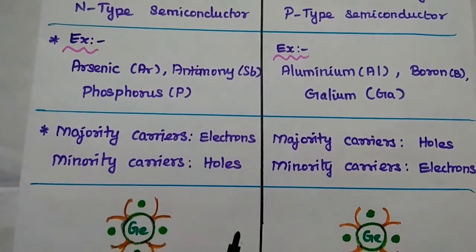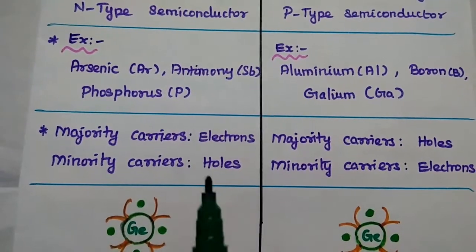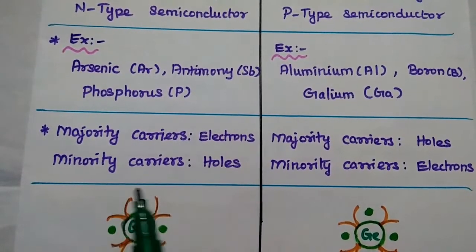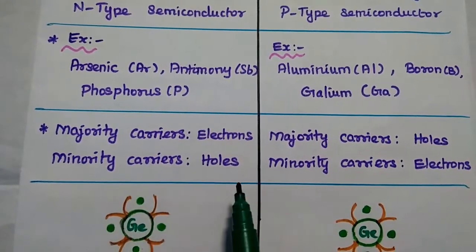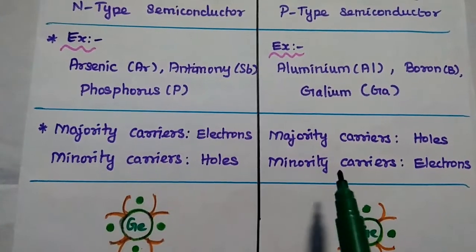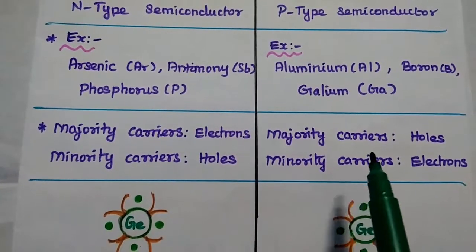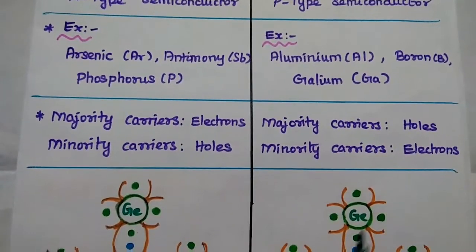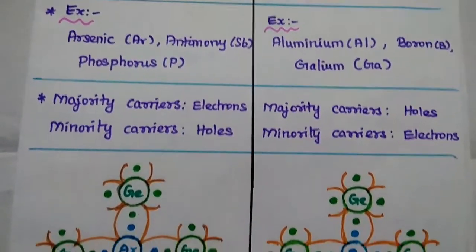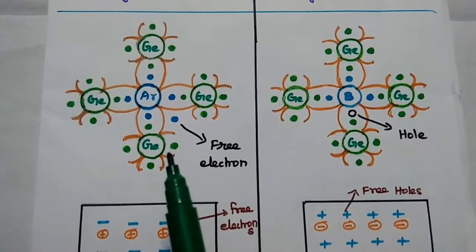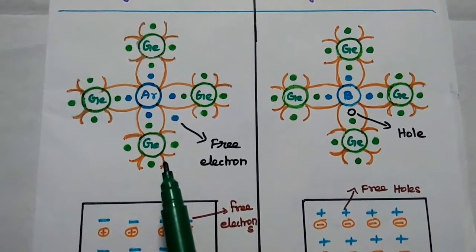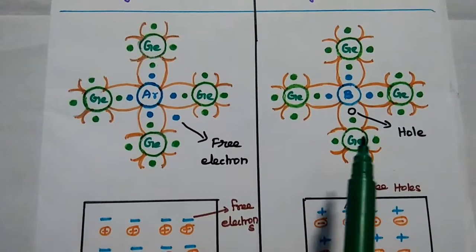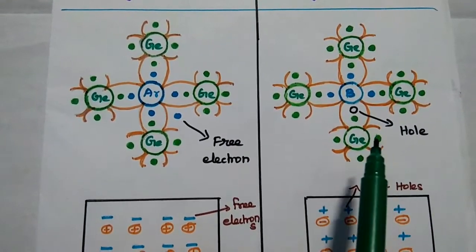In N-type semiconductor, the majority carriers are electrons and minority carriers are holes. For P-type, majority carriers are holes and minority carriers are electrons. This is the structure of N-type semiconductor; this one is for P-type semiconductor.